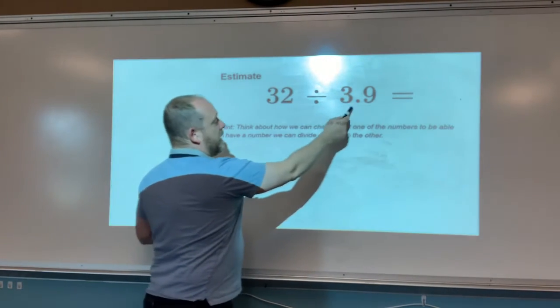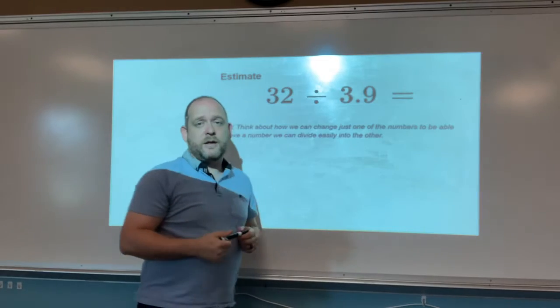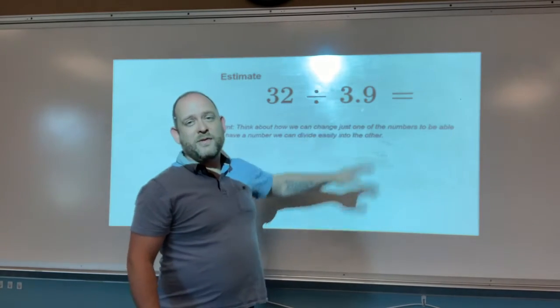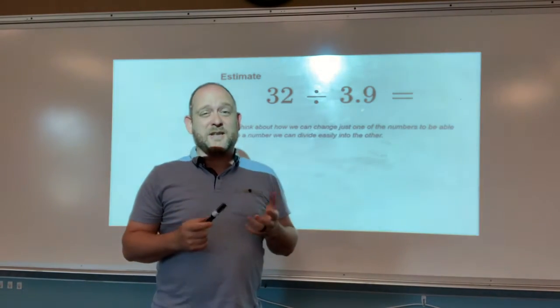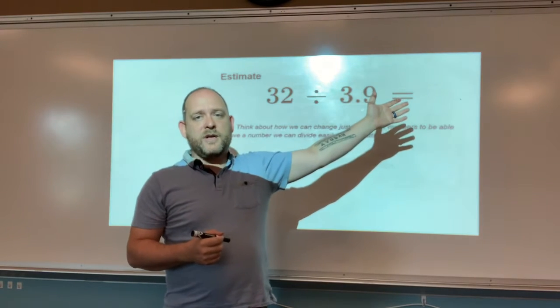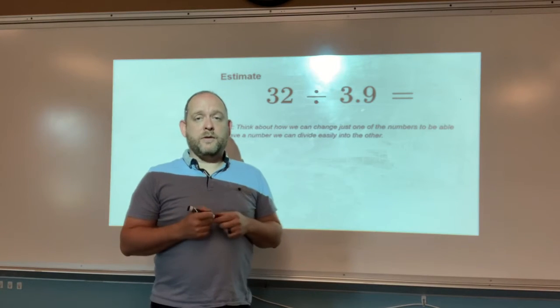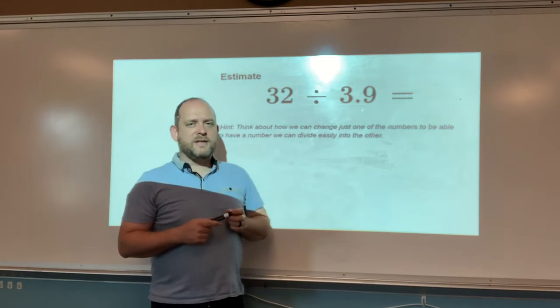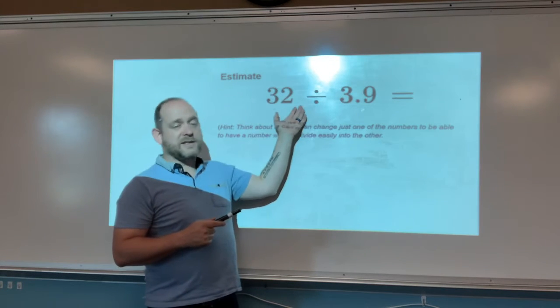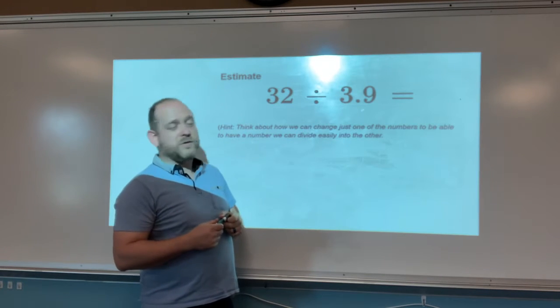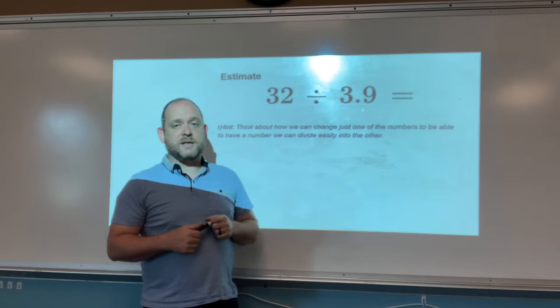We've got 32 divided by 3.9 again. We've got a number with a decimal and that doesn't match up very easily for us. Now we can do it. There are ways we can figure this out exactly and we will this year, but for right now let's think about how we can find an answer that is almost the right answer, something we can do easily in our head.